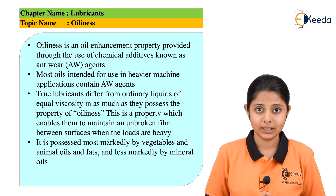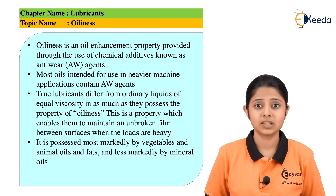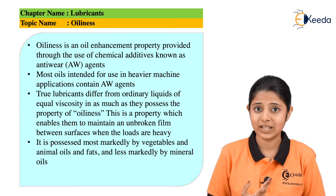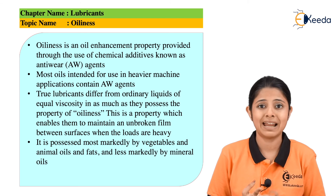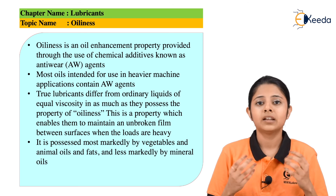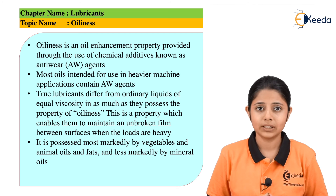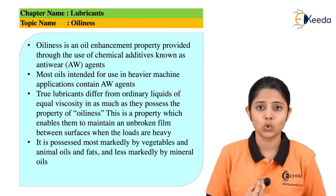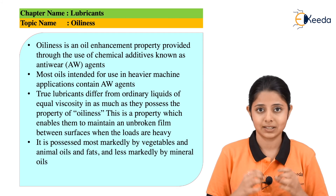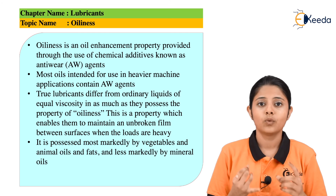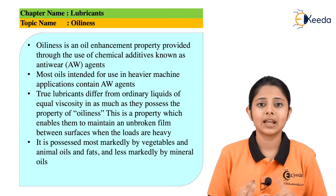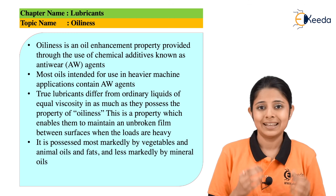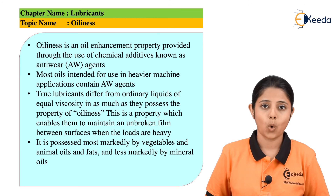The property of oiliness is possessed more by vegetable oils, animal oils, and vegetable and animal fats. The property of oiliness is much lesser in mineral oils, petrols, and diesels. Thus, vegetable oils and animal oils are used more as lubricating agents than mineral oils.